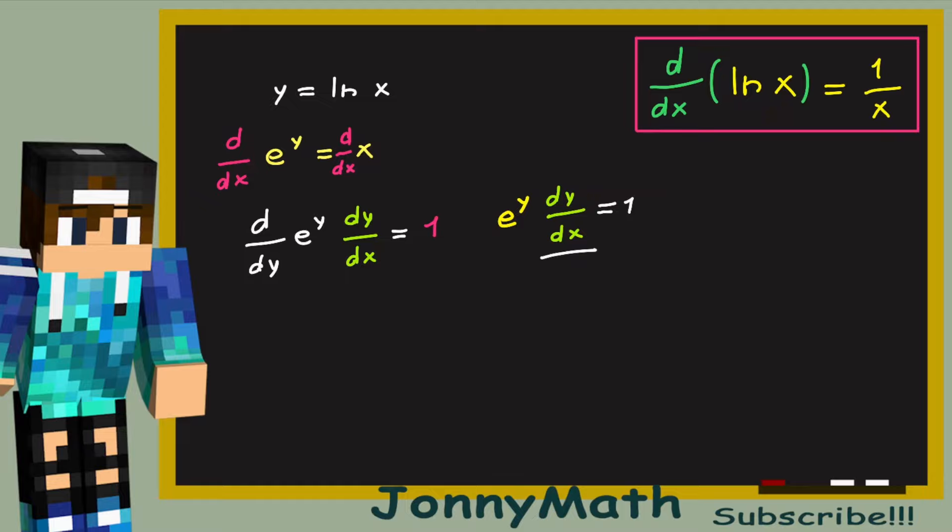Now we're interested in dy over dx, so we can bring e to the y to the other side of the equation. So dy over dx equals 1 over e to the y.